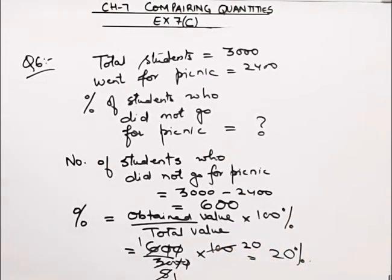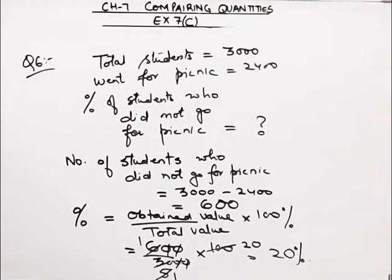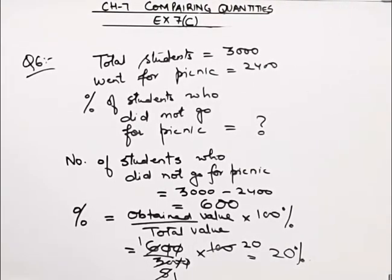The answer is 20%. This means that 20% of students have not gone for the picnic.